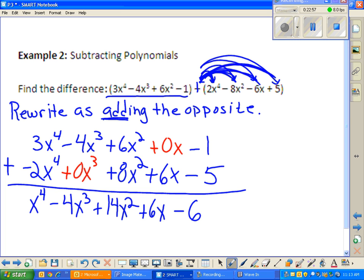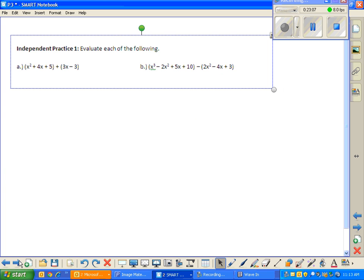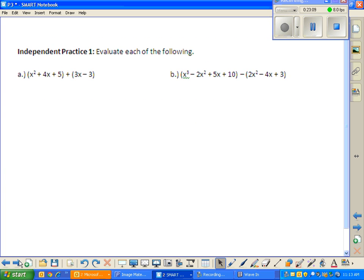So 3x to the 4th plus negative 2x to the 4th is 1x to the 4th. Negative 4x cubed plus 0x cubed is negative 4x cubed. 6x squared plus 8x squared is 14x squared. 0x and 6x is 6x. And negative 1 plus negative 5 is negative 6. So that is our answer. Questions about that? To wrap up today's lesson, you have two to do on your own. Independent practice. You have part A and part B. I'm going to pause this thing for a second.